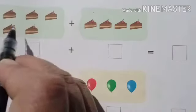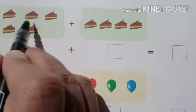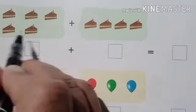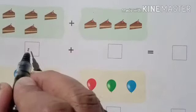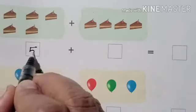One box, how many cakes are there? 5. 1, 2, 3, 4, 5. So in the box, you will write 5.